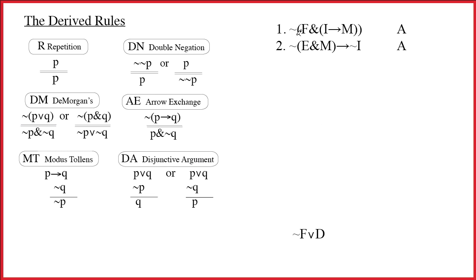We immediately notice that the main connective for the first line is a tilde. Since it's a tilde, that means we'll be using one of these three great rules, DeMorgan's or arrow exchange. In this case, it's an ampersand as the main connective on the inside, and so that means it's the second version of DeMorgan's.